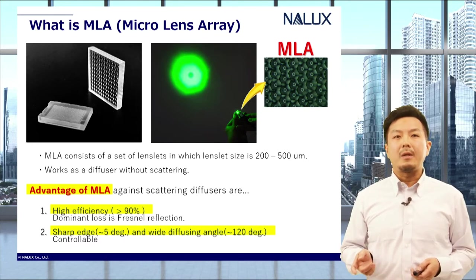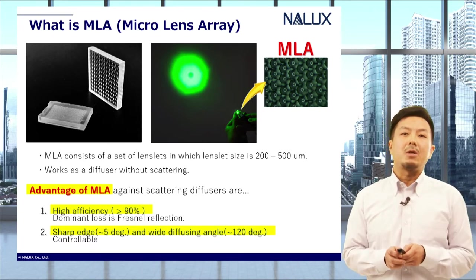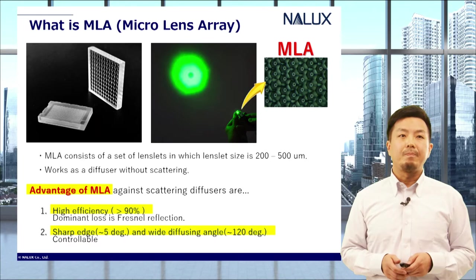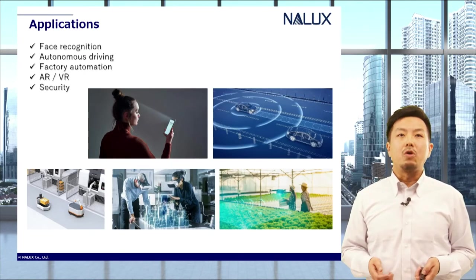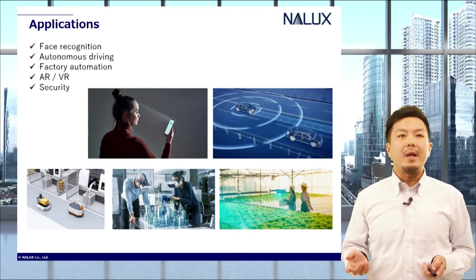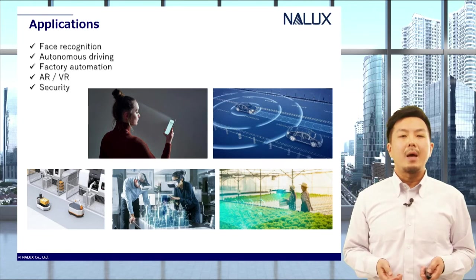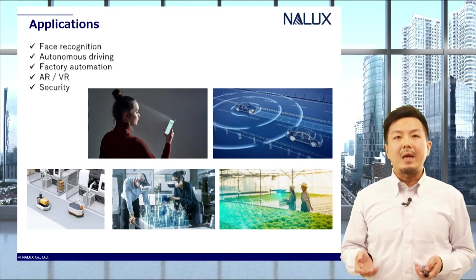Also, its controllability of edge distribution and diffusing angle will result in efficient illumination. By using MLA, a uniform light distribution with wide angle can be obtained, and it is suitable as an illuminator lens for sensors. In recent years, MLAs have been widely used as illuminator lenses for 3D depth sensors.